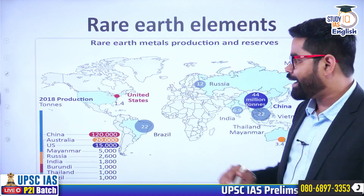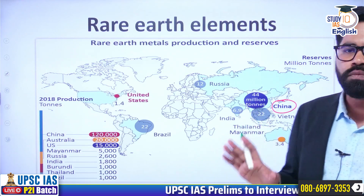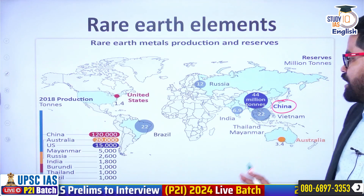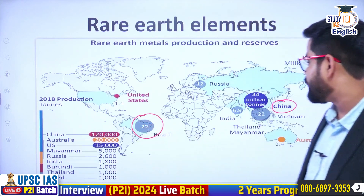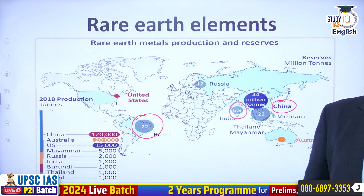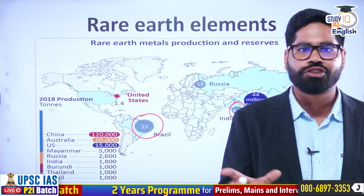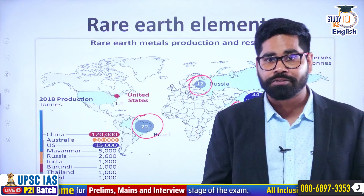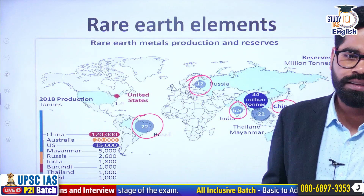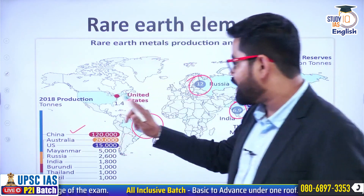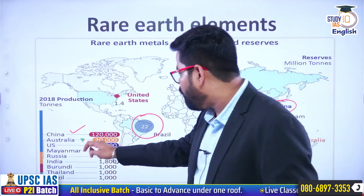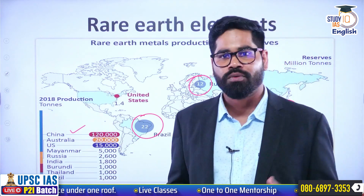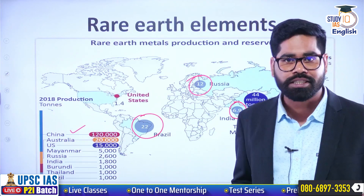Looking at the global pattern, China has the largest reserves of rare earth elements at 44 million tons. Then Thailand and Myanmar combined have around 22 million tons, Brazil also has 22 million tons, Russia is fourth, and India has 6.9 million tons — the fifth largest stock of rare earth elements. But in terms of production, China is again leading, followed by Australia, United States, Myanmar, Russia, and then India. So in terms of production we are not fifth, but in terms of potential reserves we do hold the fifth largest position.